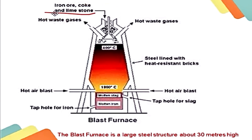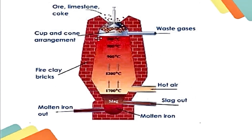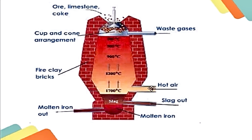Looking at the diagram, this is the main part showing the ore, coke, and limestone being added. We have very high temperatures — 1700, 1200, 900, 500, 100 degrees Celsius — decreasing as we go up, because hot air is given from the side at the bottom. Slag and molten iron are shown at the bottom.